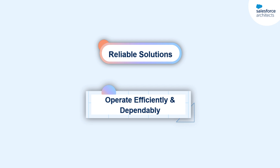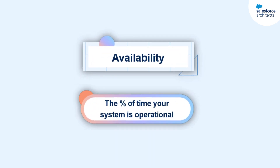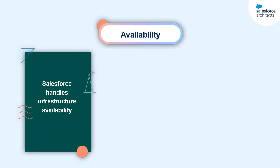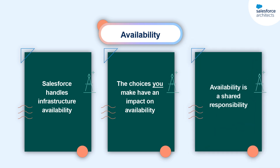Unlike our Magic 8-Ball, reliable solutions operate efficiently and dependably under a range of conditions. First off, they demonstrate the concept of availability. Availability is a measure of the percentage of time that your system is operational. While Salesforce handles infrastructure-level availability, the choices you make as an architect — whether you introduce code to the platform or just customize your apps — have an impact on availability. So really, availability is a shared responsibility between Salesforce and its customers.